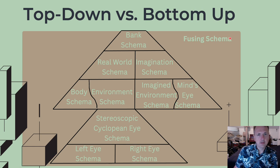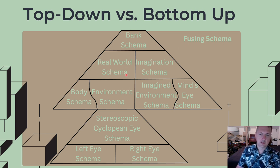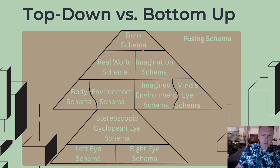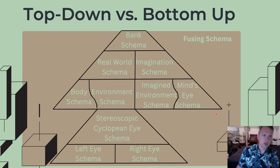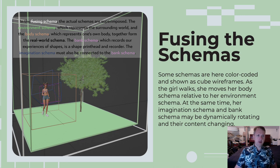Everything is encased inside the fusing schema. This also shows top-down versus bottom-up processing. At the very top is the bank, storing isometric understanding of 2D and 3D shapes. You can work downward via expectations and predictions, or start with external stimuli from eyes, ears, and proprioception and work upward. You've got the real-world schema with the grass, the tree making up the environment, plus the body schema — together they make the real-world schema.